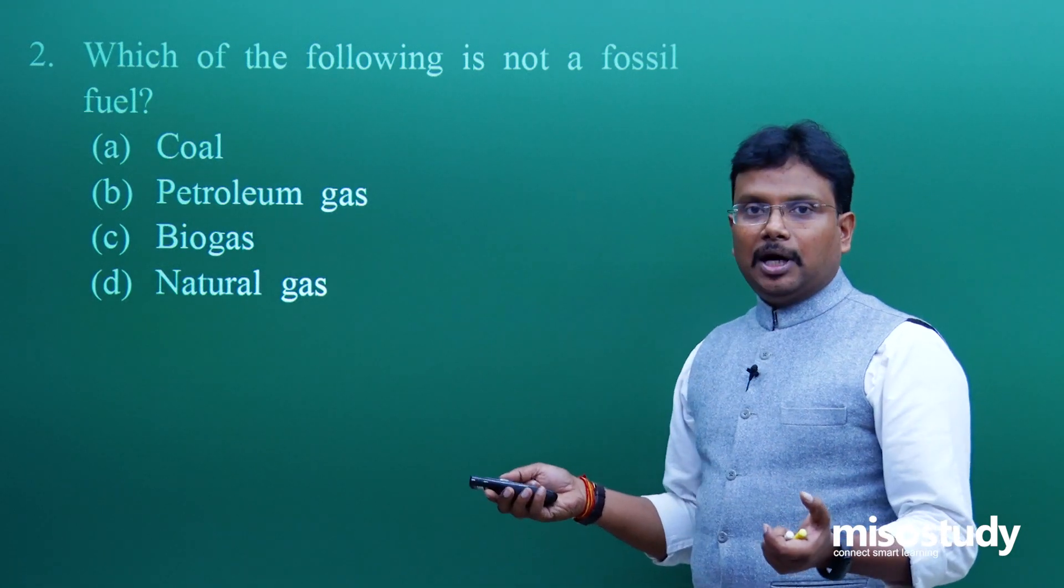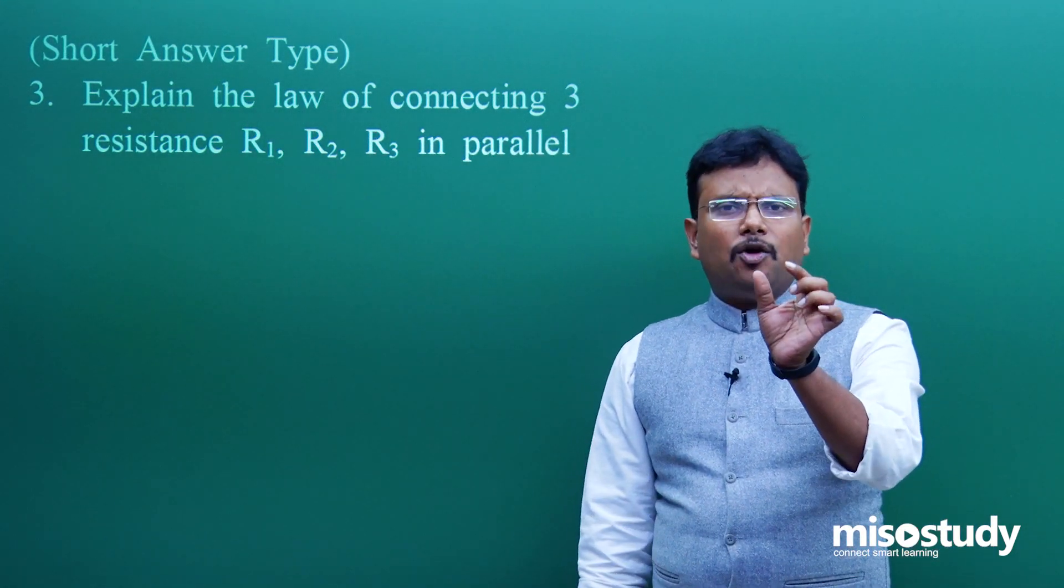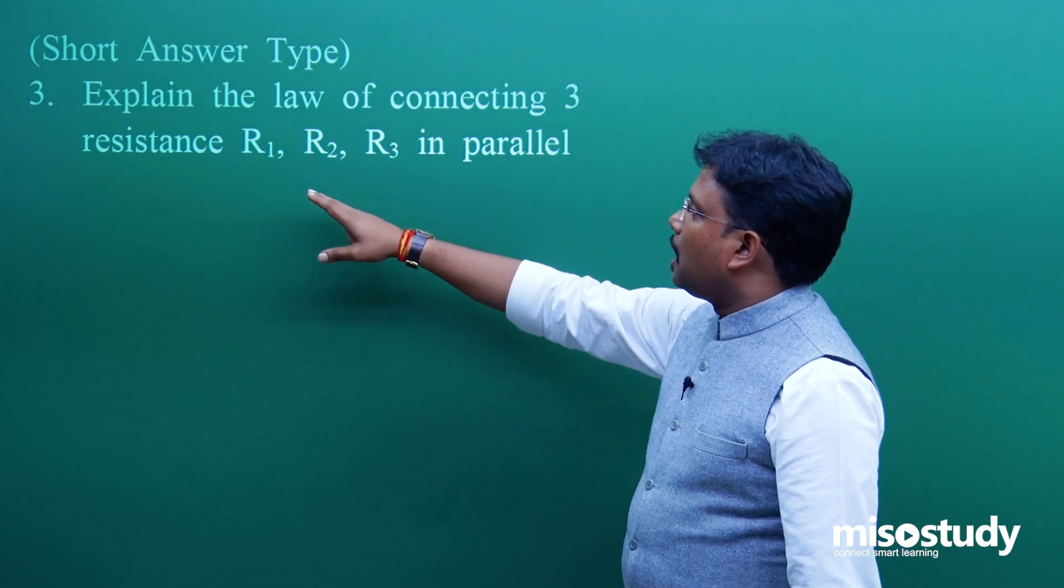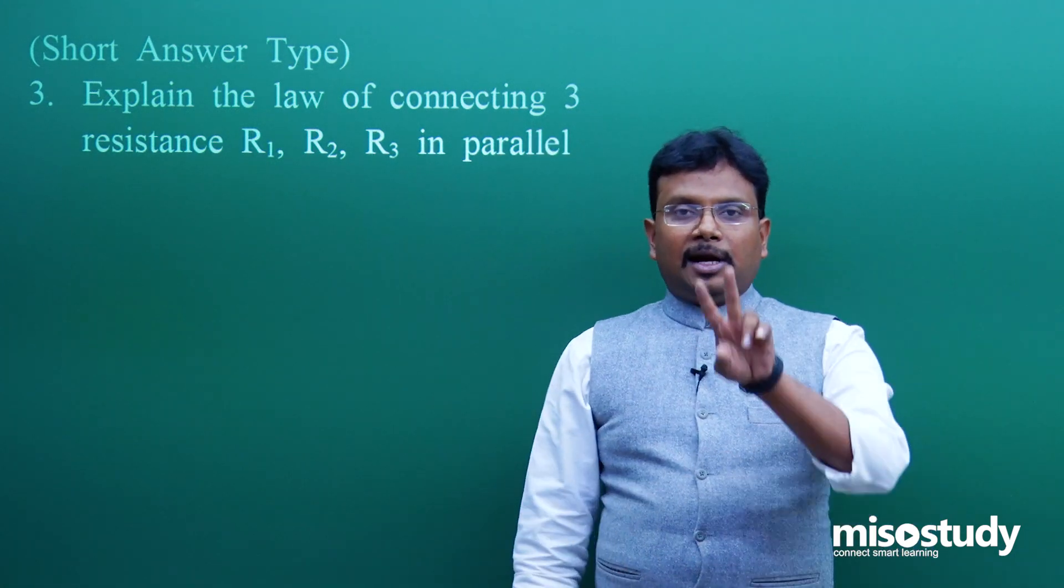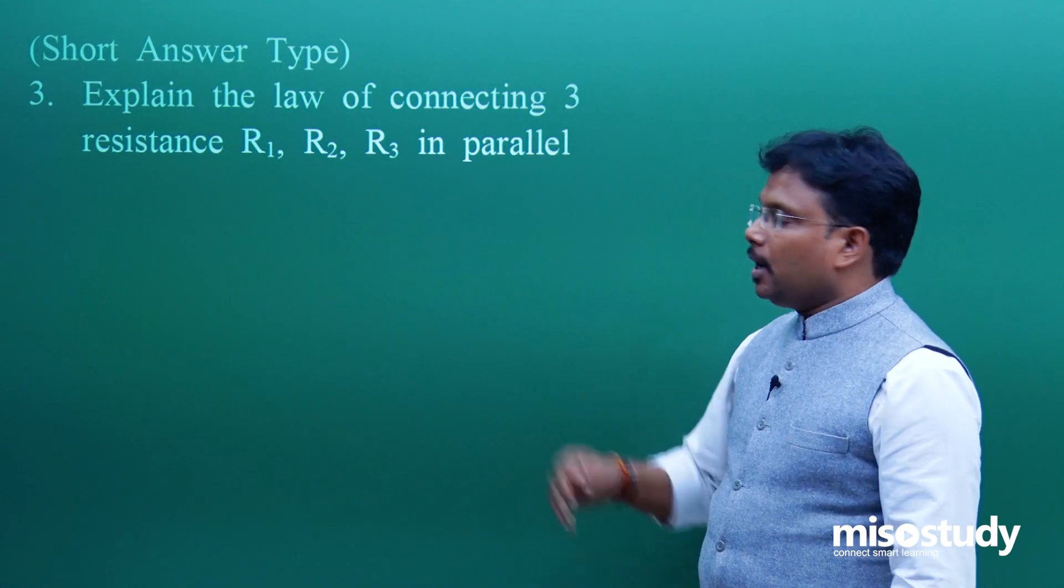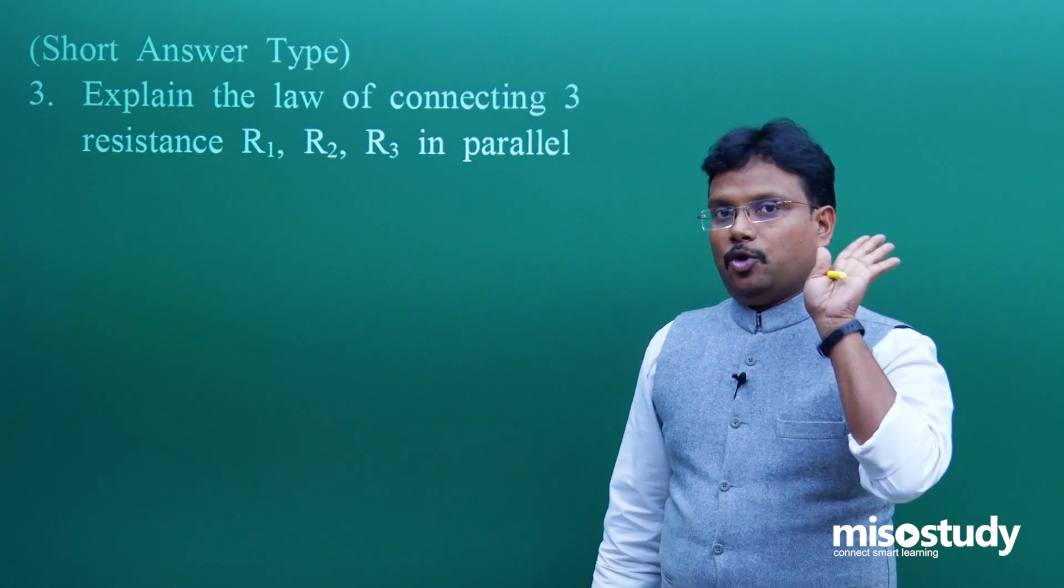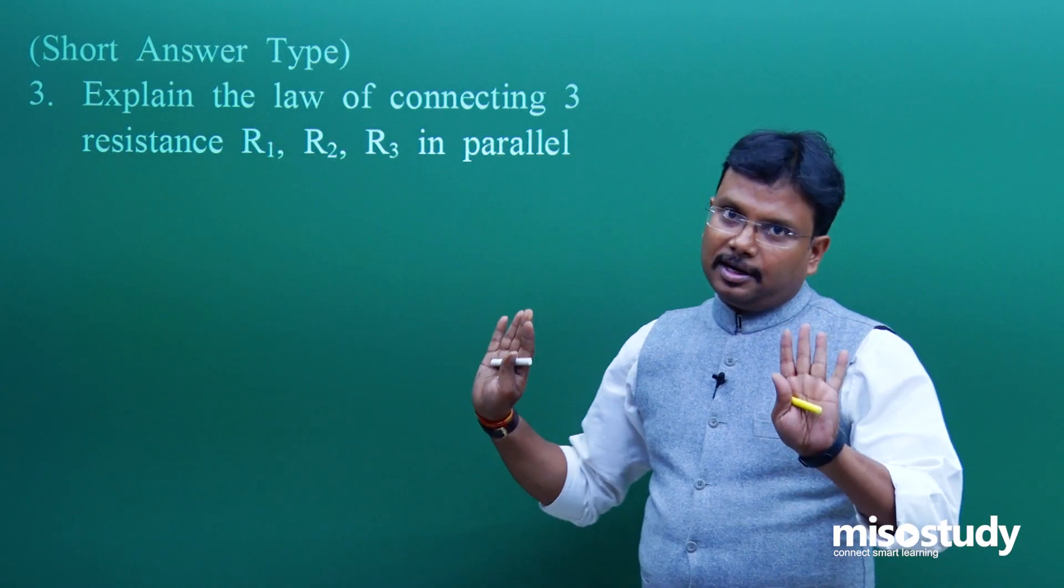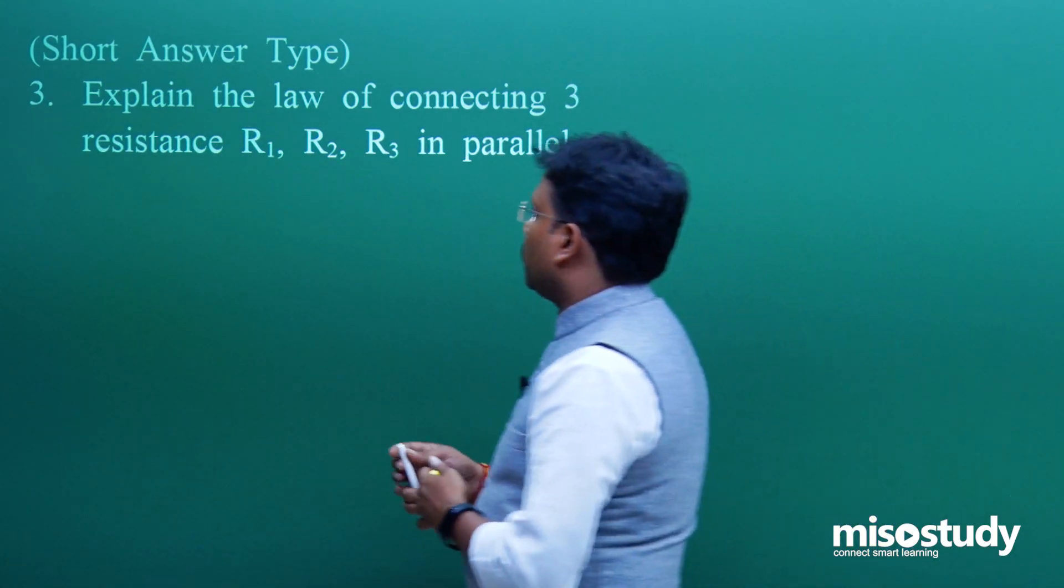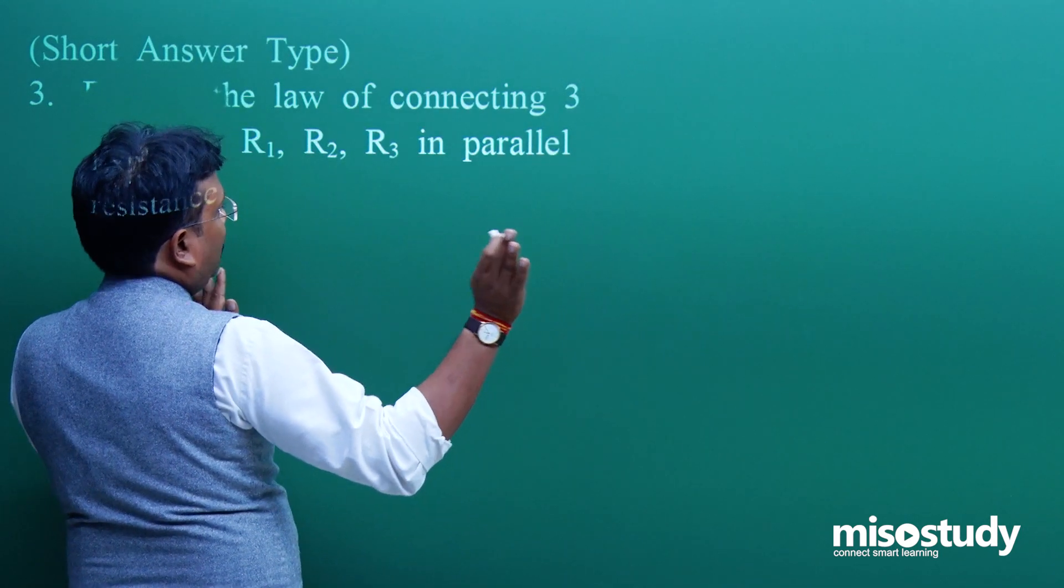From this objective zone I am coming out. Now I am coming on to the short answer type question. You have to write down maybe one or two words not more than that. Explain the law of connecting three resistances R1, R2, R3 in parallel. There are two mechanisms mentioned in this chapter, that is series and parallel. I just picked one parallel. Now because it is a short answer type, you have to simply write down the formula. Nothing else is required, short answer type only formula and if you think you can simply mention one sentence.